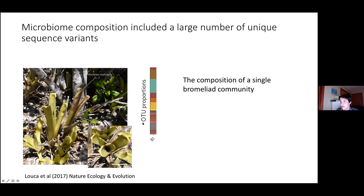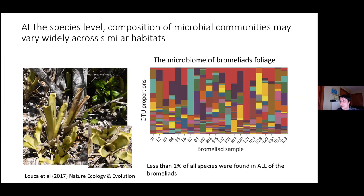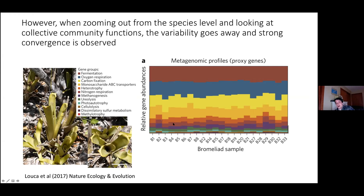They looked at a few dozen plants in close proximity and measured the microbiome on each one. The data shows the proportion of the microbiome made up by different taxa — operational taxonomic units, which you can think of as species-level resolution. Each color represents a different OTU, and the width represents the abundance of that OTU in the community. They found communities were very variable — less than one percent of all species were found in all plants.